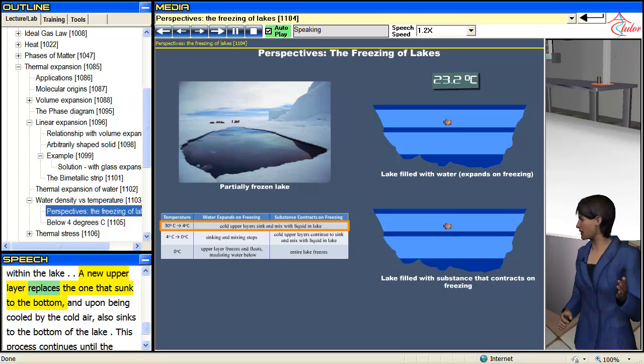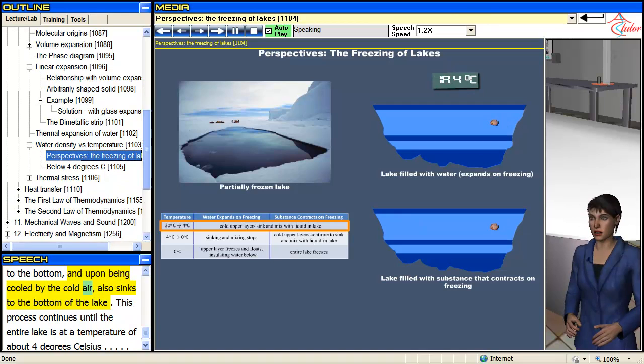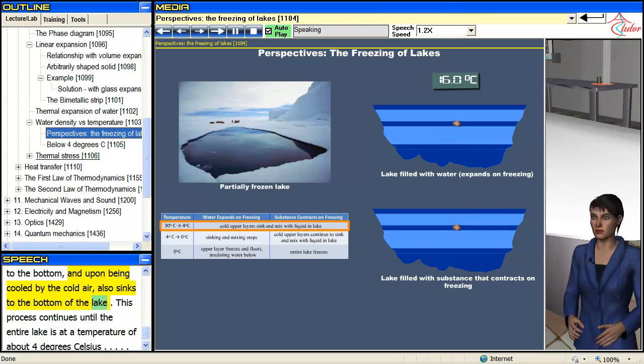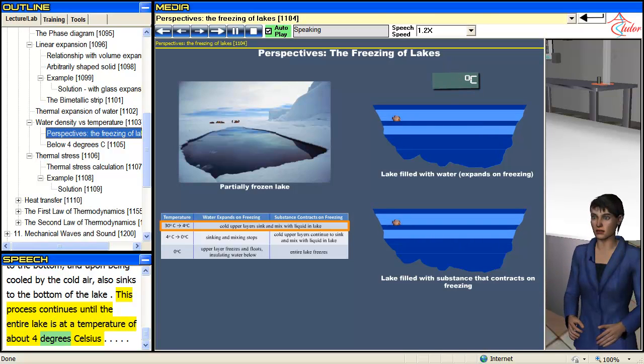The new upper layer replaces the one that sunk to the bottom, and upon being cooled by the cold air, also sinks to the bottom of the lake. This process continues until the entire lake is at a temperature of about 4 degrees Celsius.